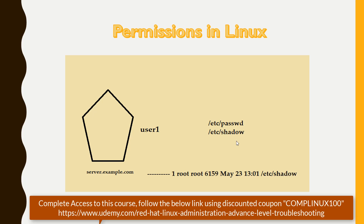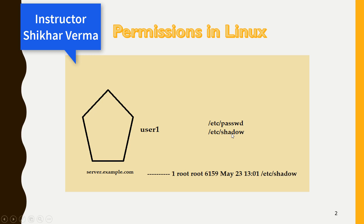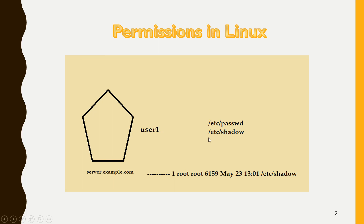Now, any user can change their own password. If user1 is logged in, they can run the passwd command, which will ask for the current password, new password, and confirmation. As soon as the user changes their password, the /etc/shadow file will be updated with the new encrypted password. But this file has no permissions for normal users — so how can a normal user change their password when /etc/shadow doesn't allow it?